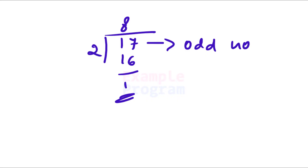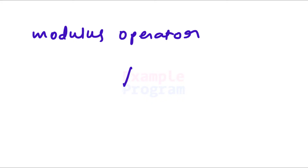Now how can we get the remainder value when we divide a number by 2? In Python programming we have an operator called the modulus operator, and this operator is denoted by the percentage symbol. If you want the remainder value when you divide a number by another number, you can use this modulus operator.